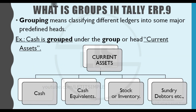What is a Group? Grouping means classifying different ledgers into the same major predefined heads. We have a group of ledgers. For example, Cash is grouped under the group or head Current Assets.